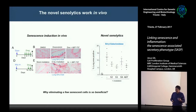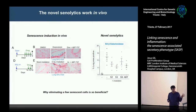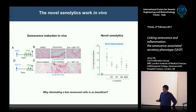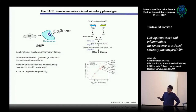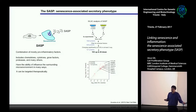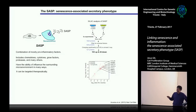One question is why eliminating senescent cells is so beneficial for so many pathologies, since very often senescent cells are just a small percentage of cells present in the tissue, yet huge improvements in phenotypes are observed. One hypothesis we are researching is precisely because of the SASP. The SASP refers to the complex mix of factors secreted by senescent cells — mainly pro-inflammatory but also including chemokines, cytokines, growth factors, and proteases — that can influence the surrounding microenvironment and be targeted therapeutically.